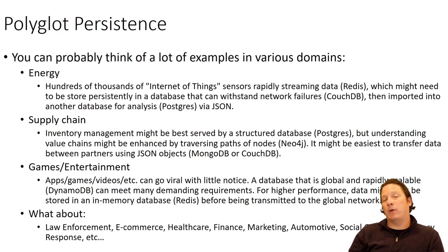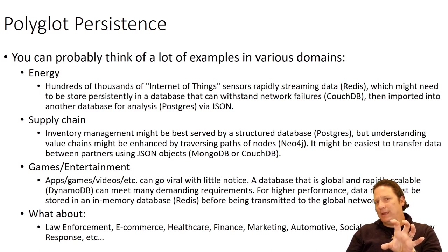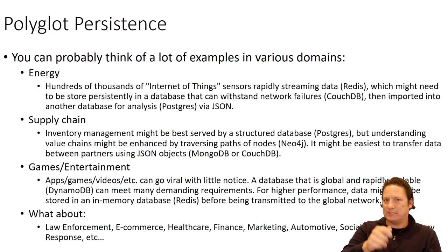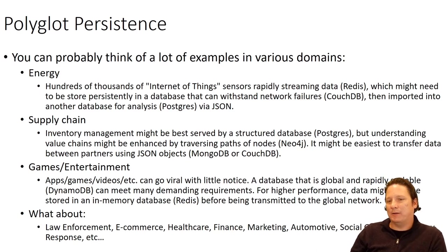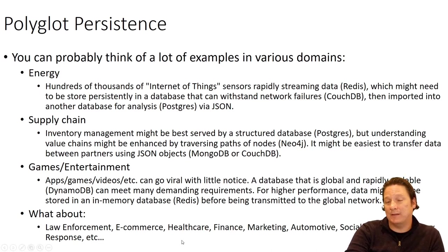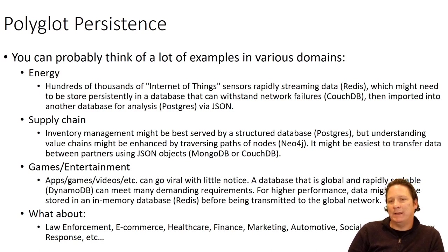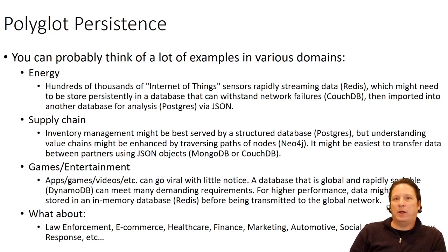Things like graph databases also get used in law enforcement and fraud investigation — they're really big for identifying criminal networks or people that are conspiring together. You might identify in a graph database a group of employees who don't have any apparent reason to be together all the time, but they're checking into the same building at the same time, logging into the same systems, with just weird access patterns. This is something that happens in law enforcement and fraud investigations. In a healthcare setting, contact tracing since COVID is another great use case for graph databases.